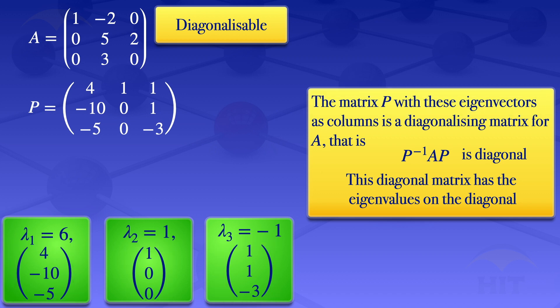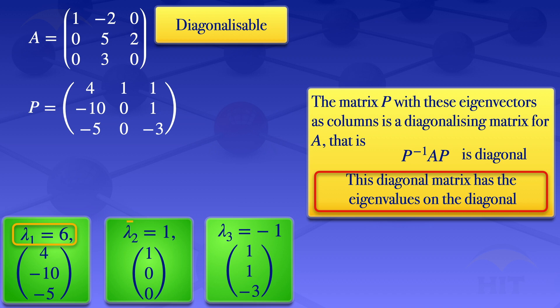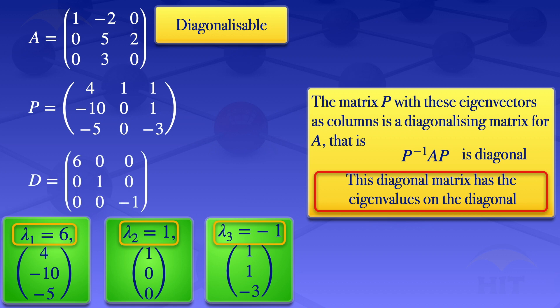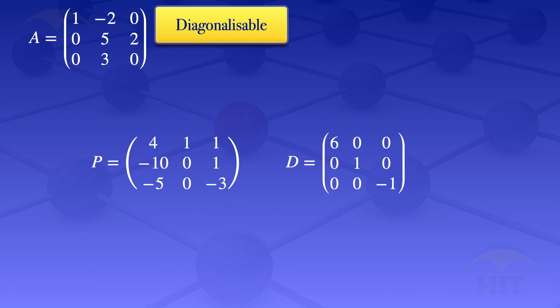For the diagonal matrix D, the eigenvalues appear on the diagonal. Our eigenvalues are λ = 6, λ = 1, and λ = -1, so D is the matrix with elements 6, 1, -1 on the diagonal. Therefore, the given 3 by 3 matrix A is diagonalizable, its diagonalizing matrix is P, and the diagonal matrix is D with eigenvalues 6, 1, -1 on the diagonal.